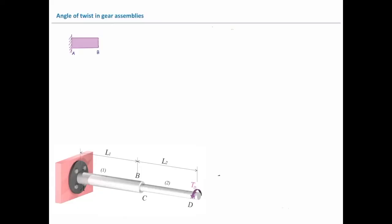To determine that, if I look at this structure from the side, I would see these two elements where the torque is applied at D, and the total twist will be a function of twist in each of these two elements. So I need to determine twist in element number 1 and element number 2.